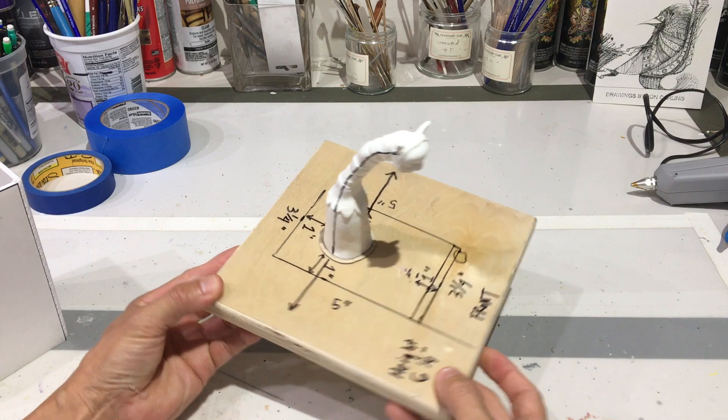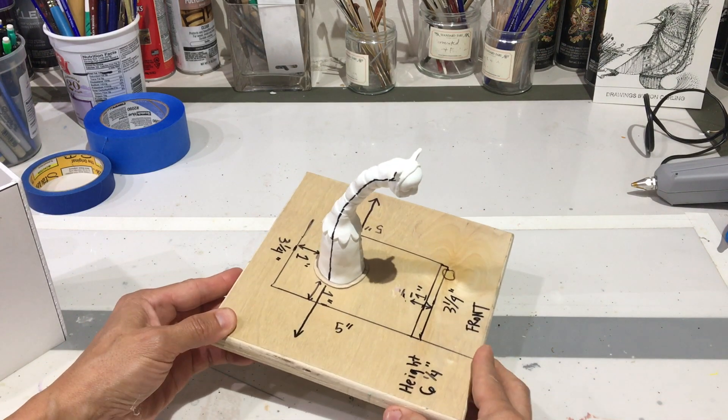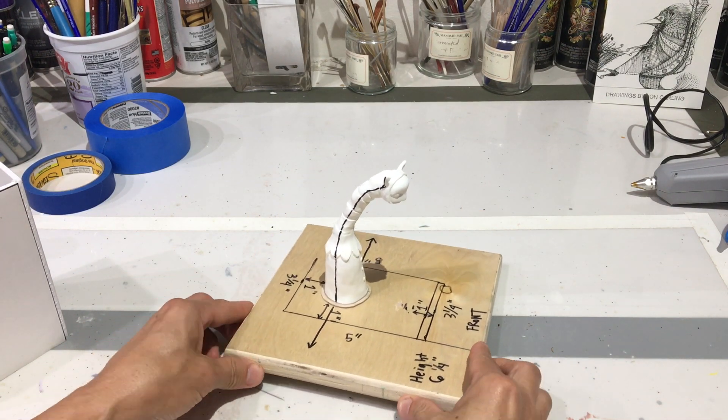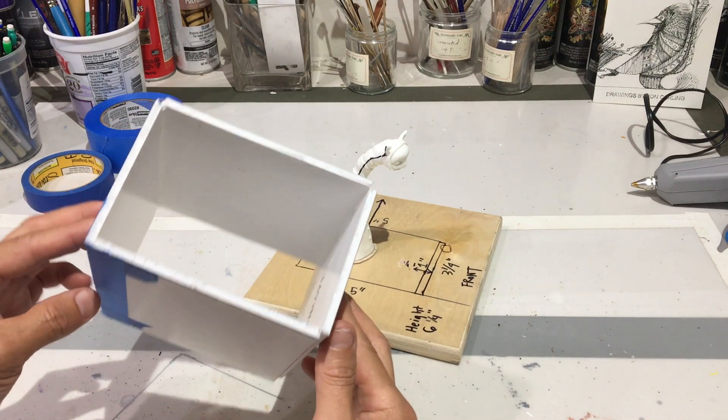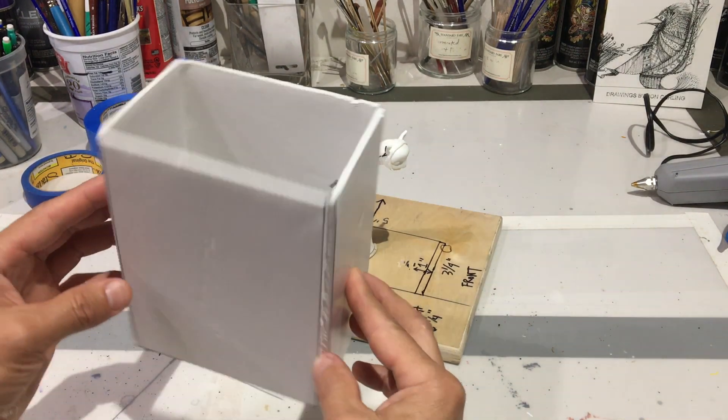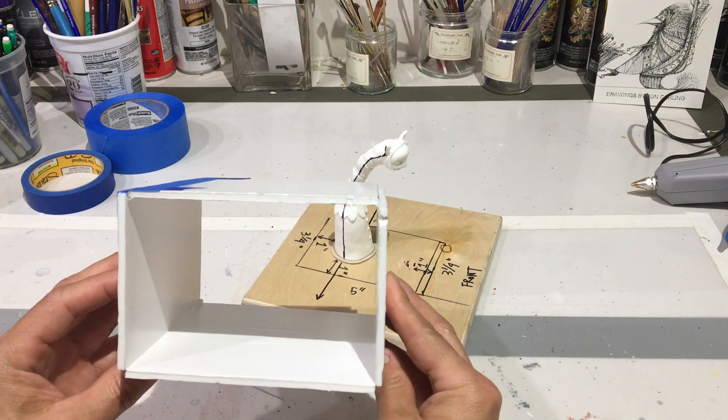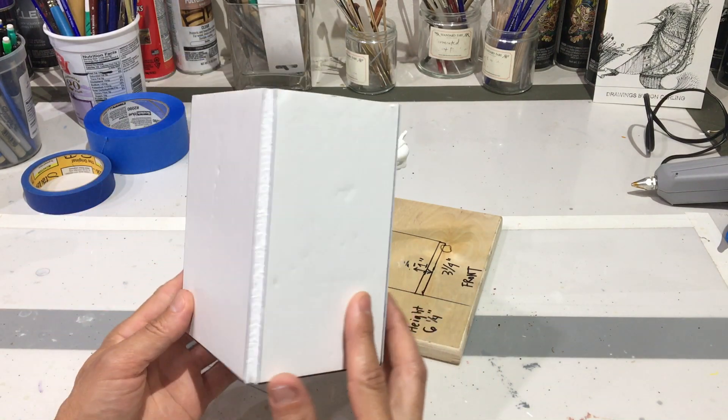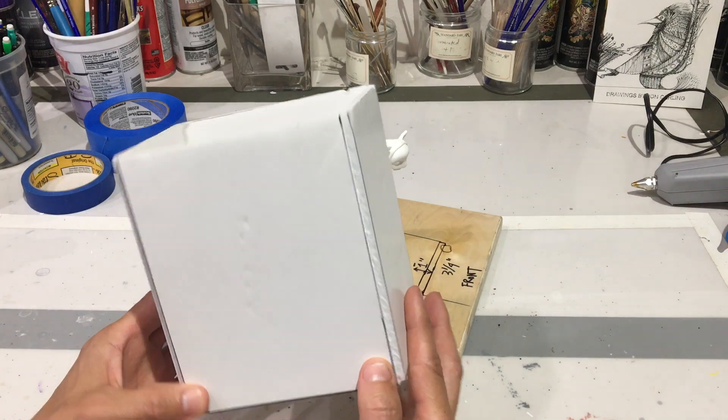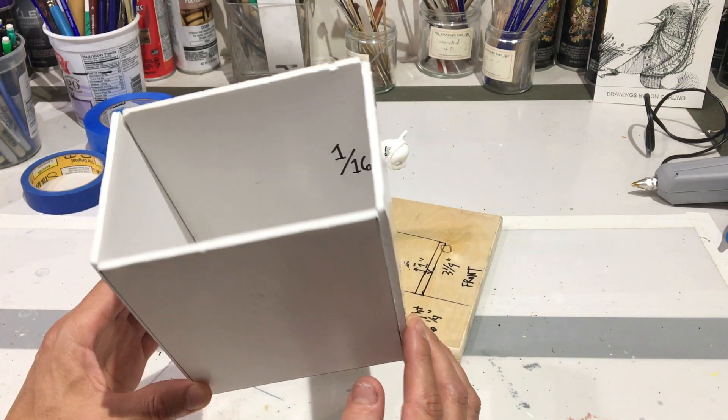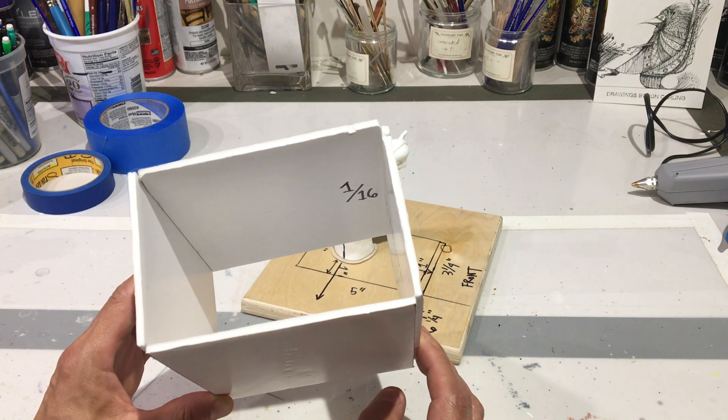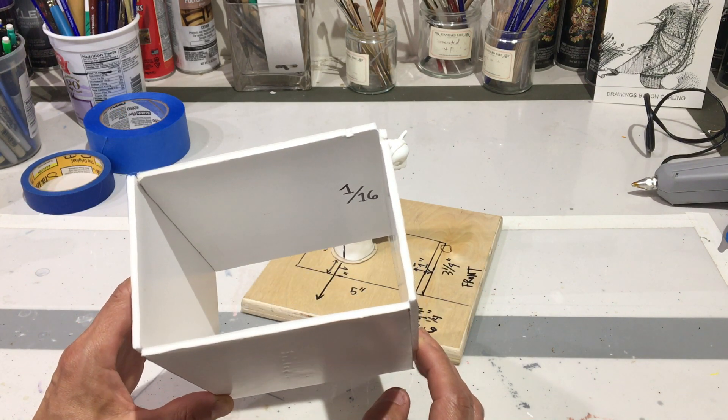So the next step is to take these dimensions and build a mold box that will fit around this piece. And that's what this is right here. A very easy and efficient mold box made out of foam core. So I just did a video not long ago where I go through this whole process of making this box step by step. So if you want to see how this is done check that out. There's a link in the description.